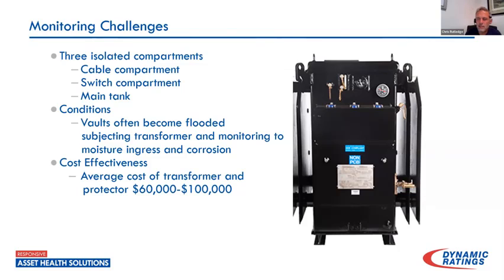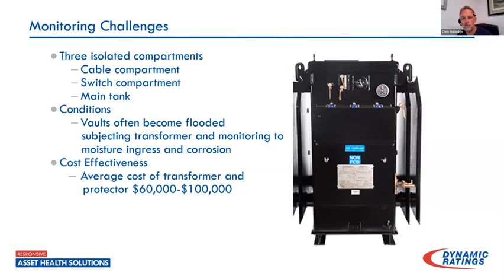With these transformers in particular, when looking at online monitoring, they're kind of unique. They have three isolated compartments — they don't share a gas phase at all. They are nitrogen-blanketed for the most part. You have a cable compartment where your primary comes into the transformer, a switch compartment which lets you isolate or ground that transformer, and then a main tank where your core and coil assembly resides.